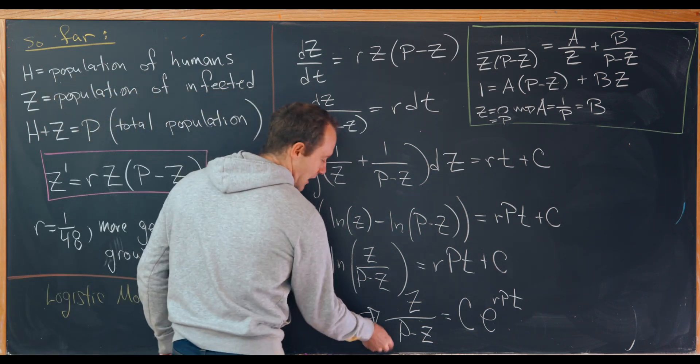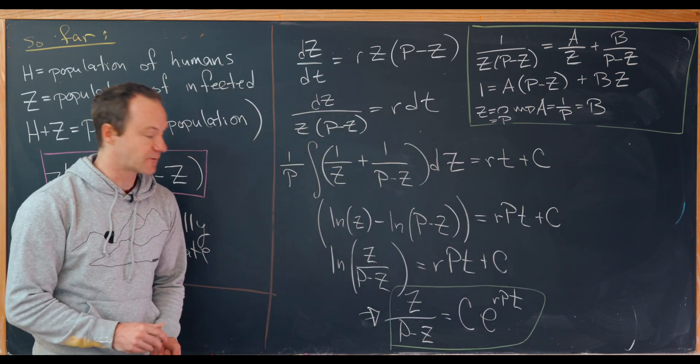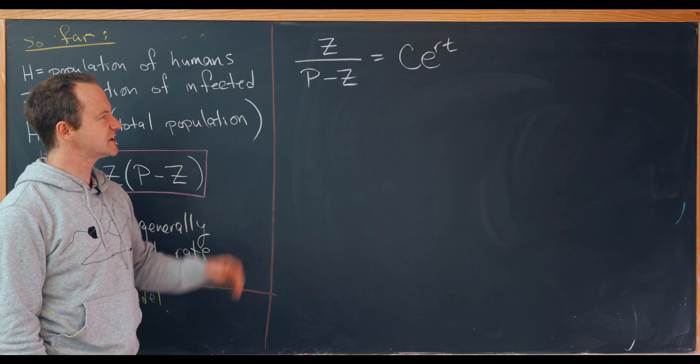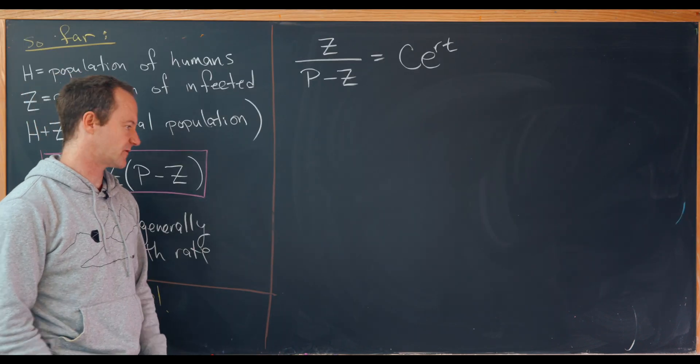Okay. So now we're almost there to having a closed form for the population of the infected. Let's maybe do that on the next board. Okay. So this is where we ended up. Now we need to solve for Z.